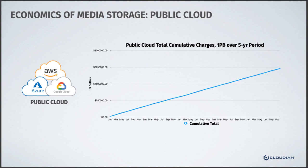Contrast that to a private object cloud where there's an initial capital investment and then you're amortizing that cost over time — your cost goes down, you have hardware refreshes, but you don't have this constant increase over a period of time. You gave a wonderful example about cars — rental cars, Ubers versus leasing versus buying. Can you give a summary of that idea?